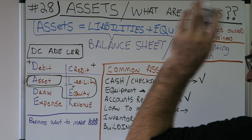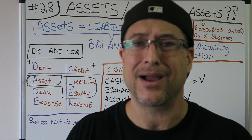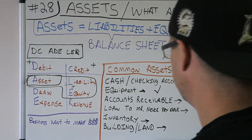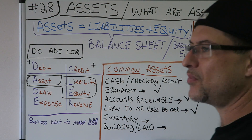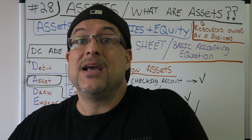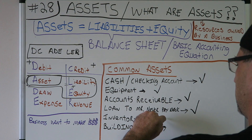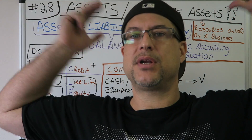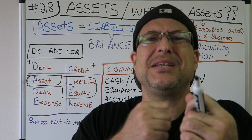A loan to somebody — if they pay me back I'd have more money to make more money, so that's an asset too, even if they never pay you back. Inventory — I've got products, widgets, I'm going to sell them to get more money — that's an asset, a resource. Land and building — I own a building on some land, everything's operating there, I'm going to make more money with it — yes, land and building are assets.